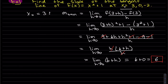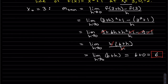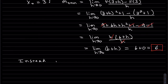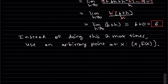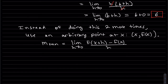Instead of doing this calculation three separate times, we'll use an arbitrary variable point. Instead of x naught as a constant to plug in, we use the variable x in the same formula. So the slope of the tangent line is expressed with x plus h in the limit formula.